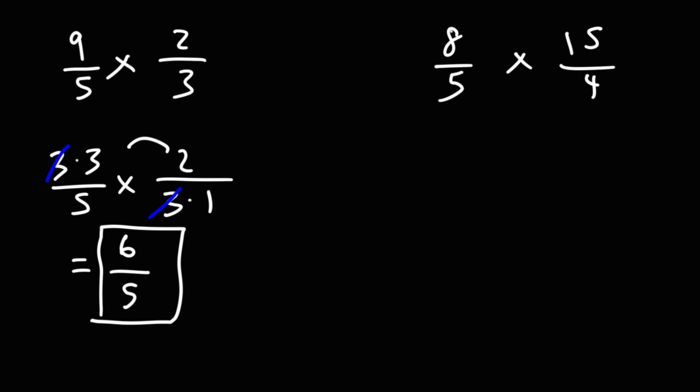For the fourth example, notice that 8 is divisible by 4, and 15 is divisible by 5. So we could simplify before we multiply.